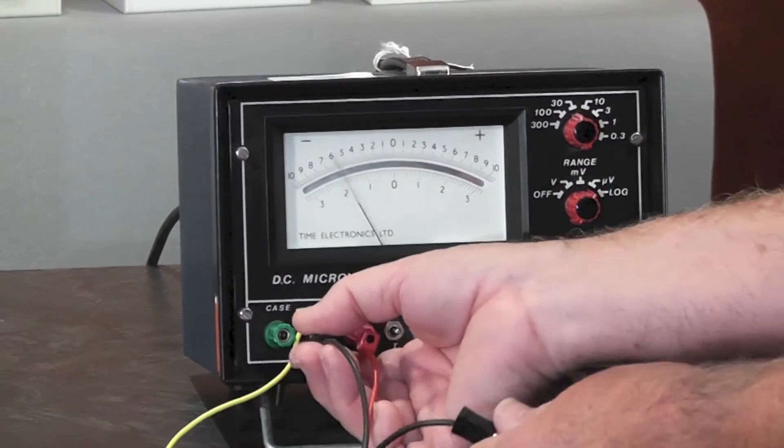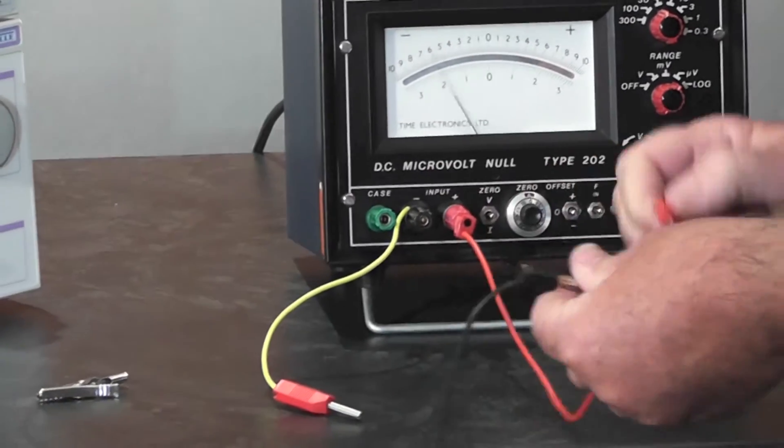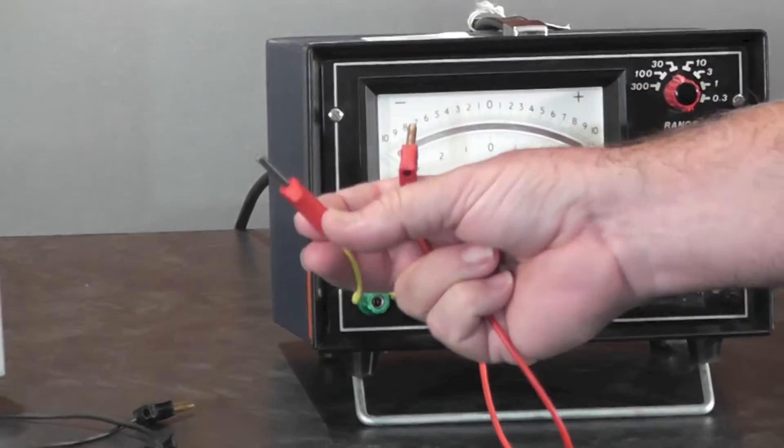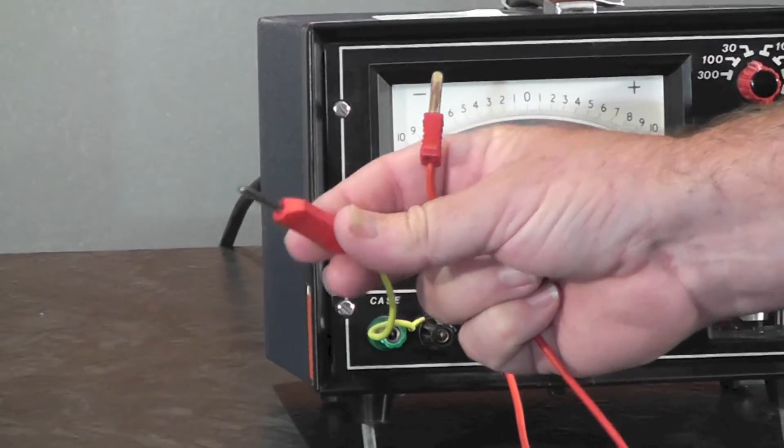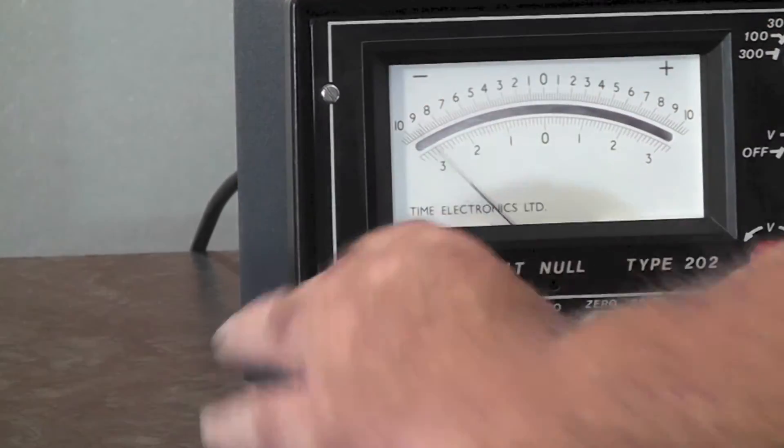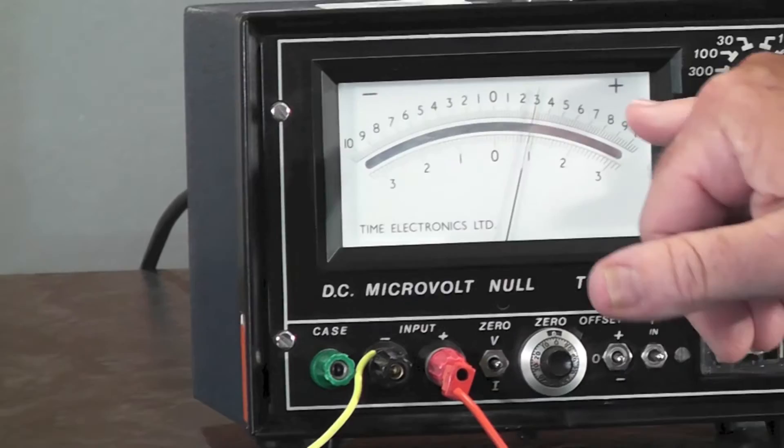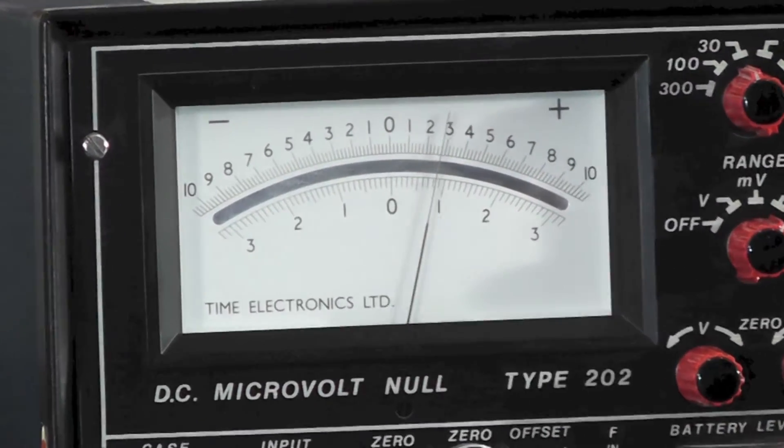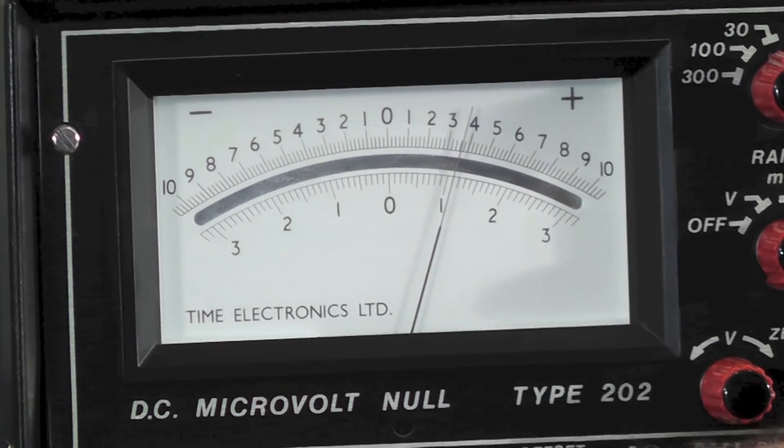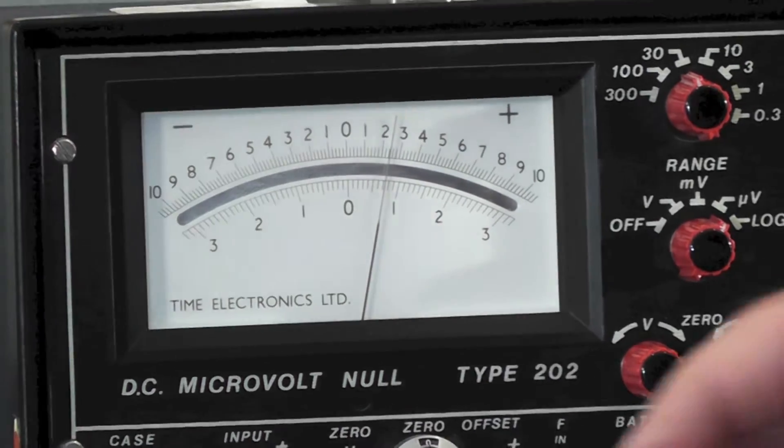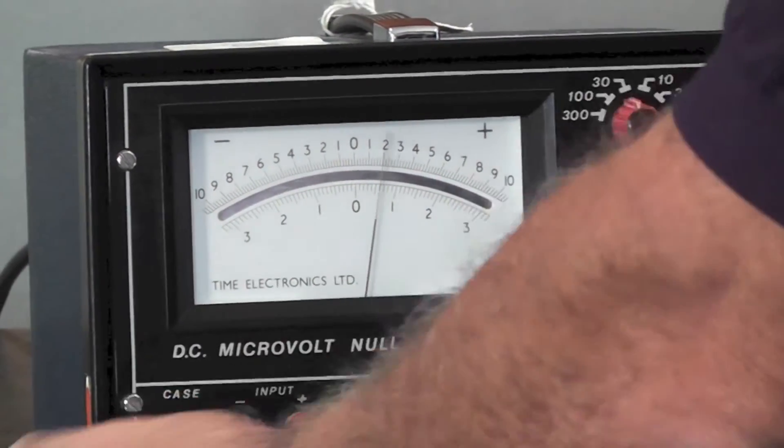Taking another example, using the traditional brass nickel plated brass banana plug, very common everywhere. Again, huge voltages. We're talking here, you can see, 10 microvolts at least just from that. So that's another little problem.